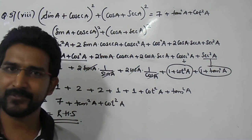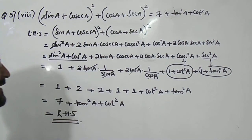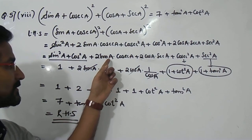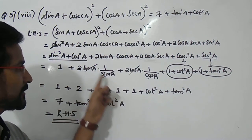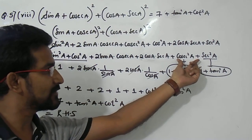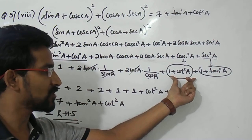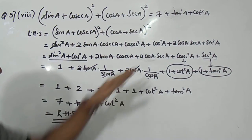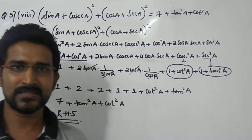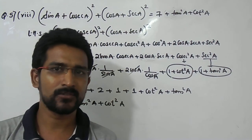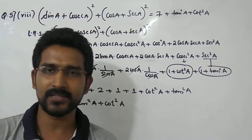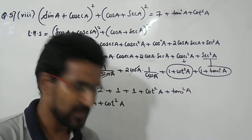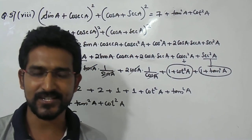So in this proof we applied first the (a + b)² identity, then sin²θ + cos²θ = 1, and cosec = 1/sin so those terms cancelled. Similarly the cos terms cancelled. We converted cosec²a as 1 + cot²a and sec²a as 1 + tan²a. When you add all the terms you get exactly the RHS. This is how we prove this identity. In the next session we are going to see sub-question 9. Thank you.